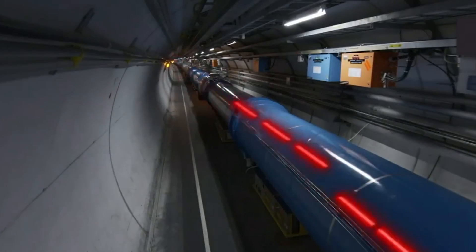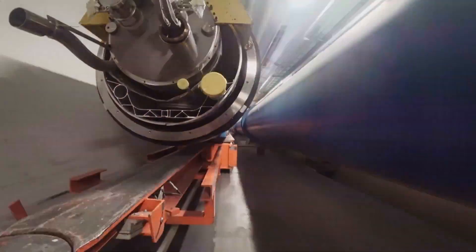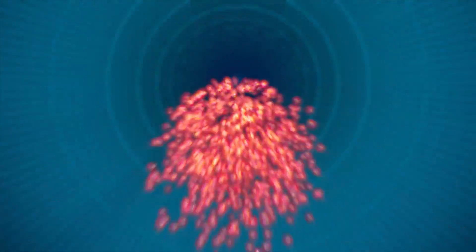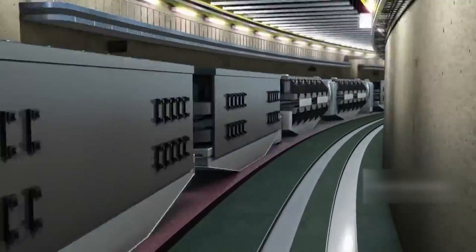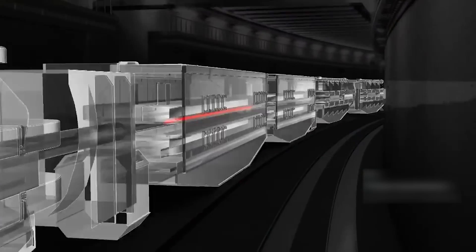The LHC is a particle accelerator that pushes protons or ions to near the speed of light. It comprises a 27-kilometer ring of superconducting magnets and various accelerating structures that enhance the energy of the particles during their journey. At CERN, the accelerator complex consists of a series of machines with increasing energy levels.